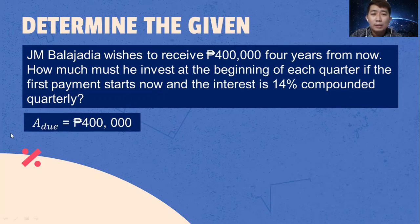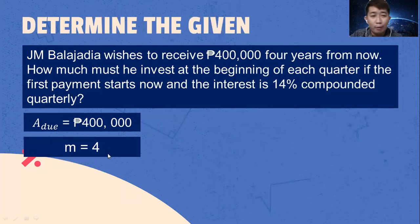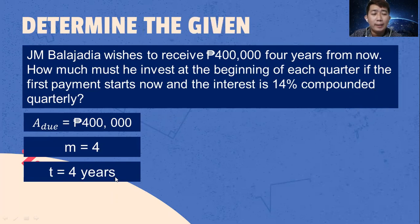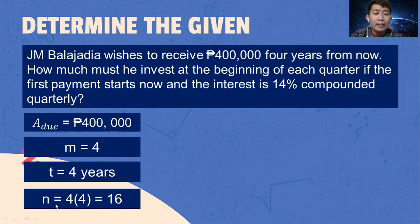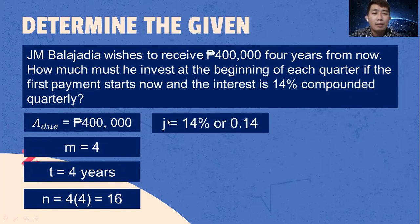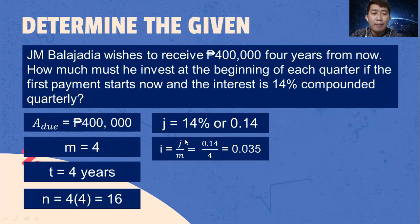What are the given? We have a present value of annuity due of 400,000 pesos, because of the phrase 'four years from now.' The total number of compoundings per year is 4 because it's quarterly. Time is 4 years. To get N, we multiply T by M: 4 times 4 equals 16. The nominal interest rate J is 14% or 0.14. We get i by dividing J by M: 0.14 divided by 4 equals 0.035.